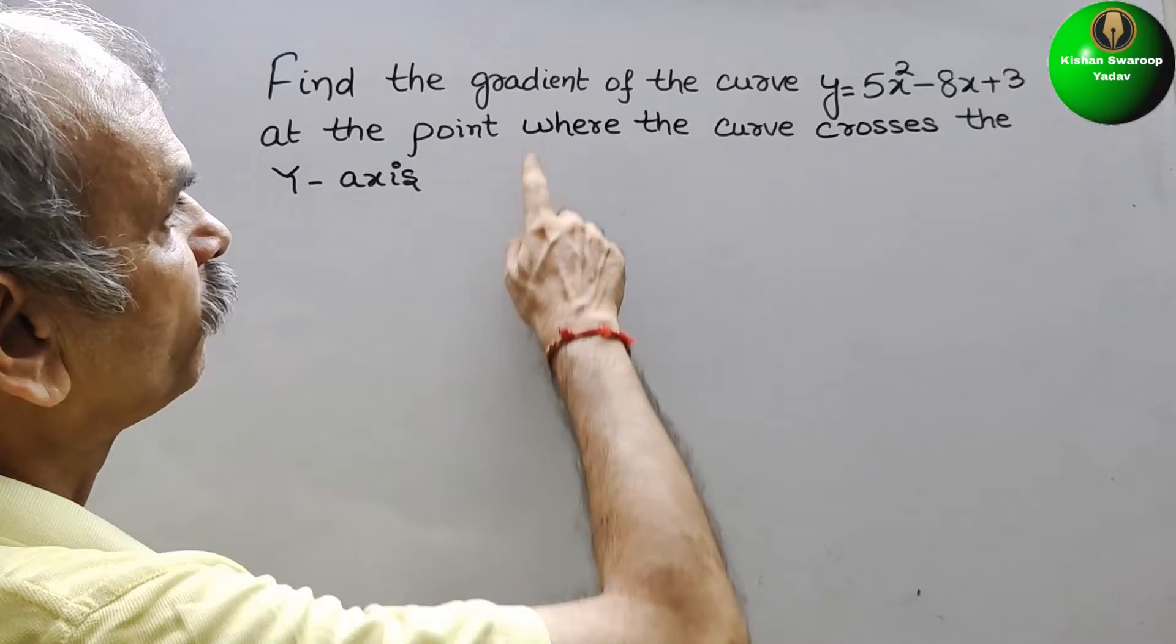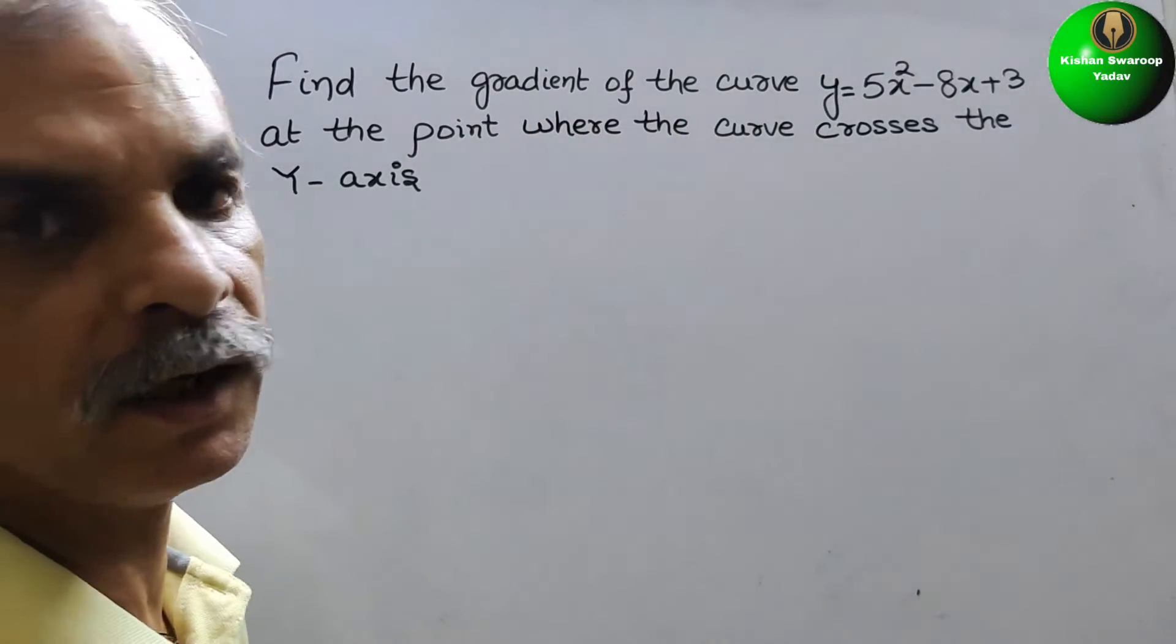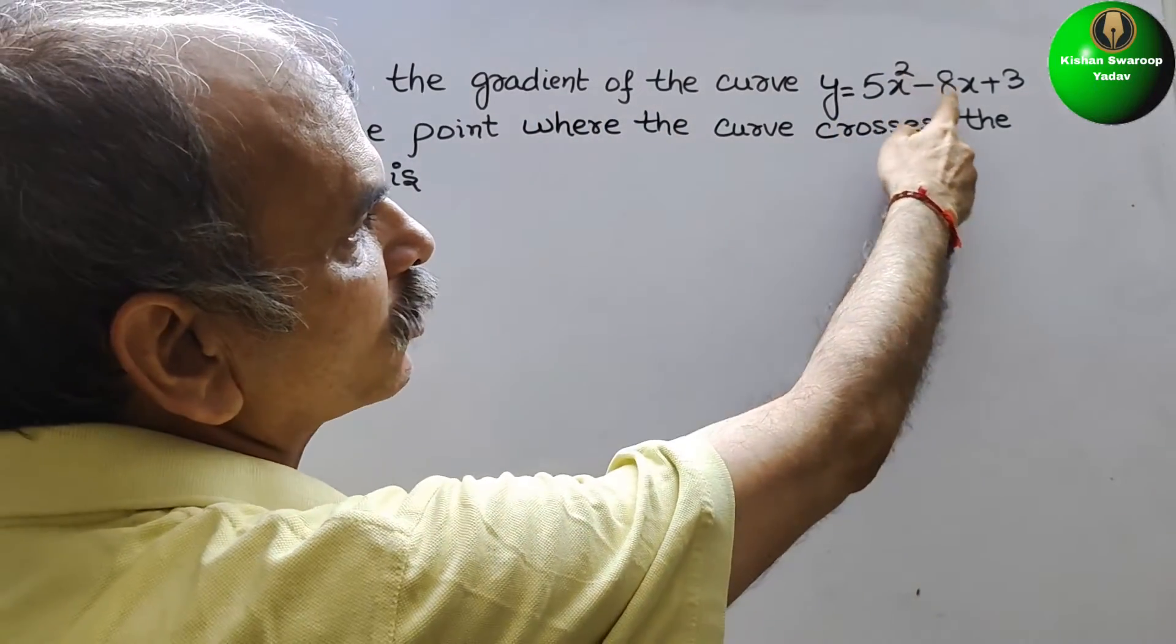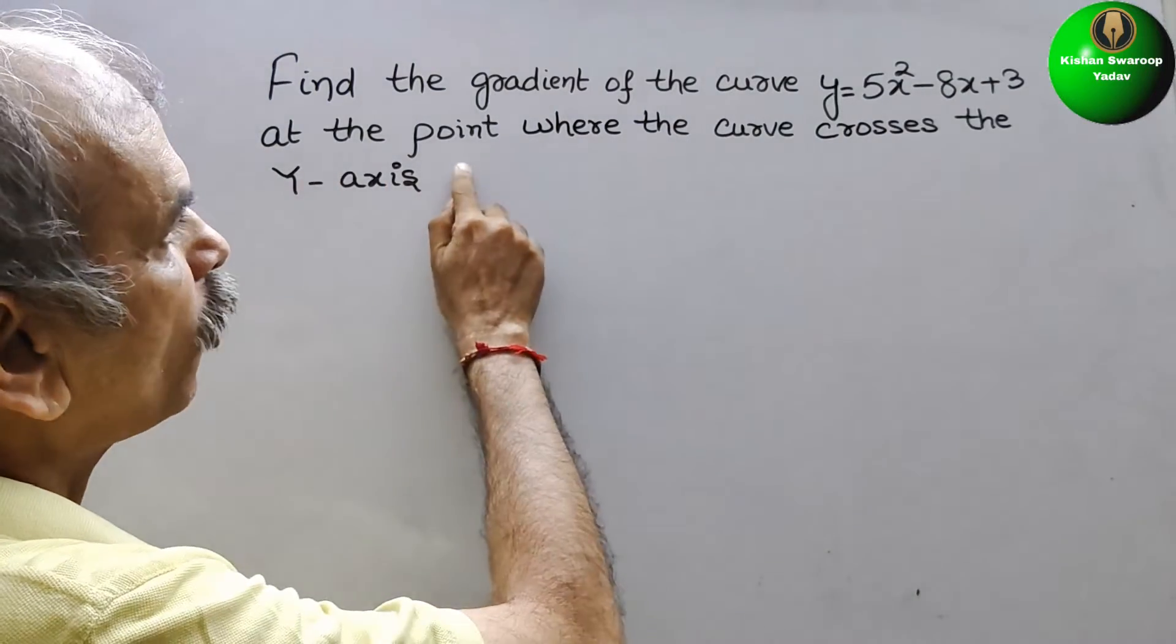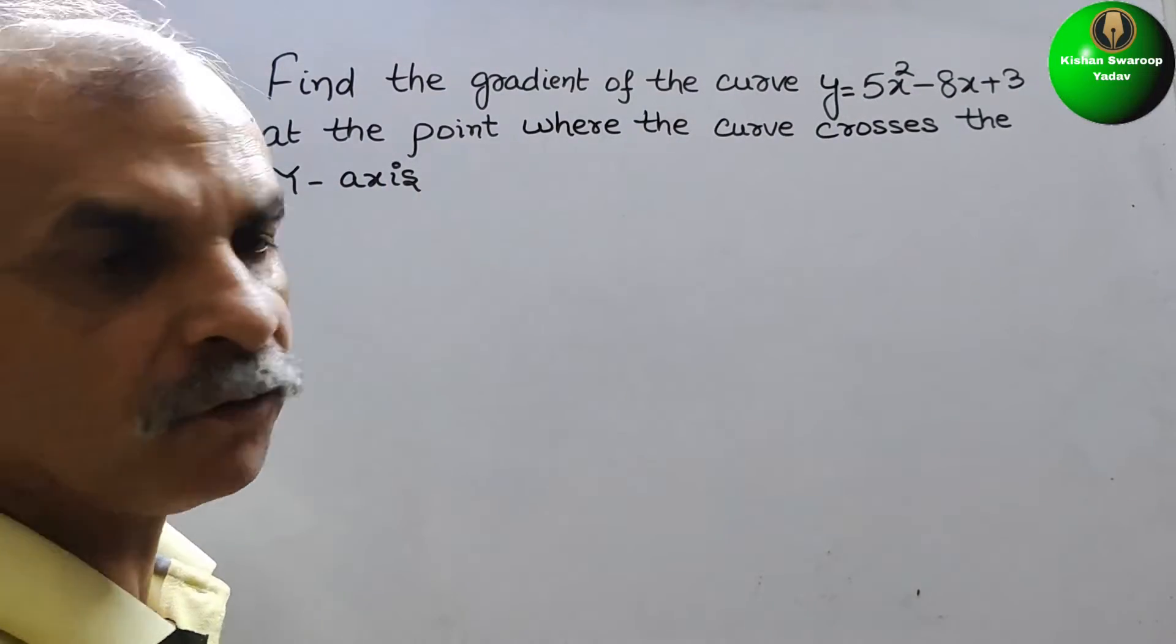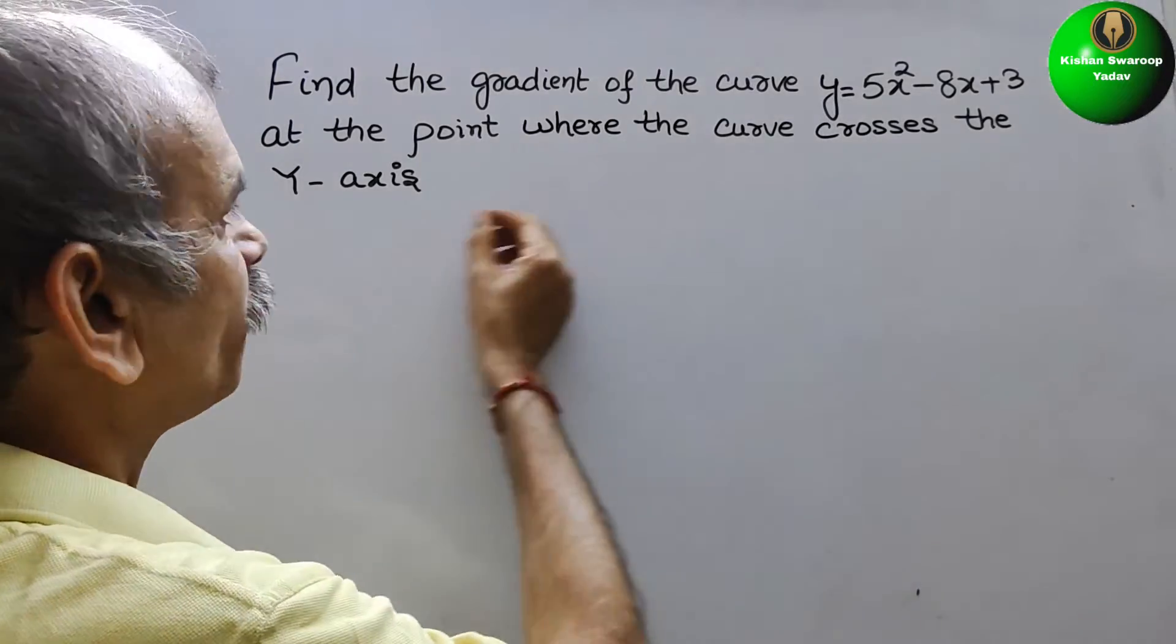Your question is find the gradient of the curve y equals 5x square minus 8x plus 3 at the point where the curve crosses the y-axis.